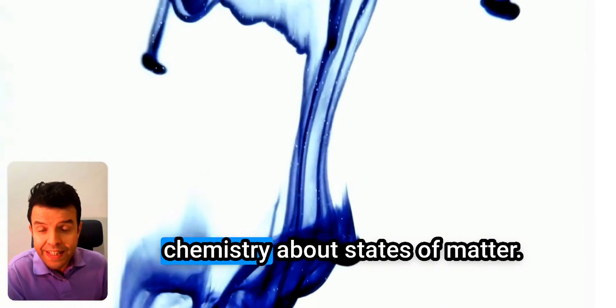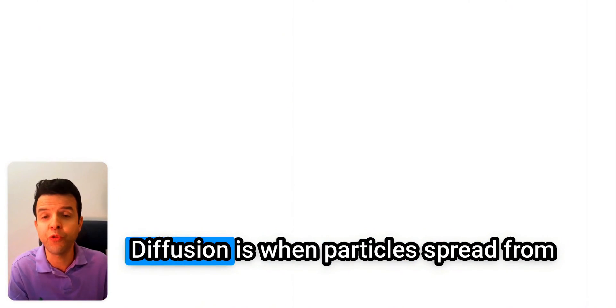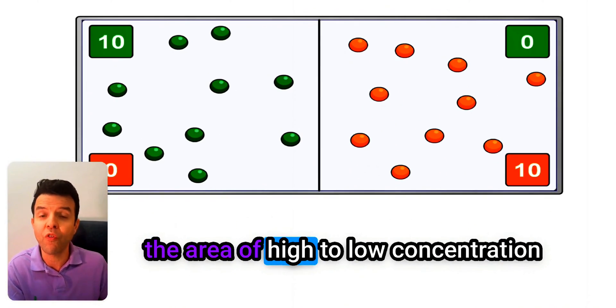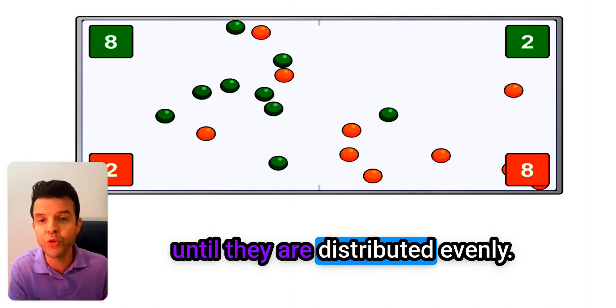This is chapter one of IGCSE chemistry about states of matter. Here we're talking about diffusion. Diffusion is when particles spread from the area of high to low concentration until they are distributed evenly.